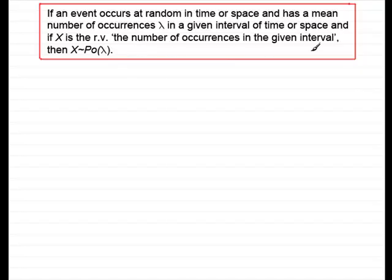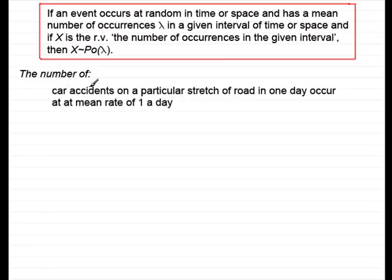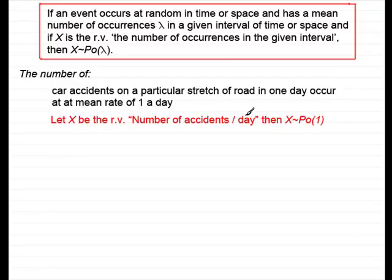Where do you get Poisson distributions? It's all about the number of occurrences in a given interval of space or time. For instance, the number of car accidents on a particular stretch of road in one day occur at a mean rate of 1 a day. This could be a Poisson distribution if the events occur at random in time or space. We've got the mean number of accidents, one, and the interval is a day. So we could say that X, the number of accidents per day, follows a Poisson distribution with mean one.